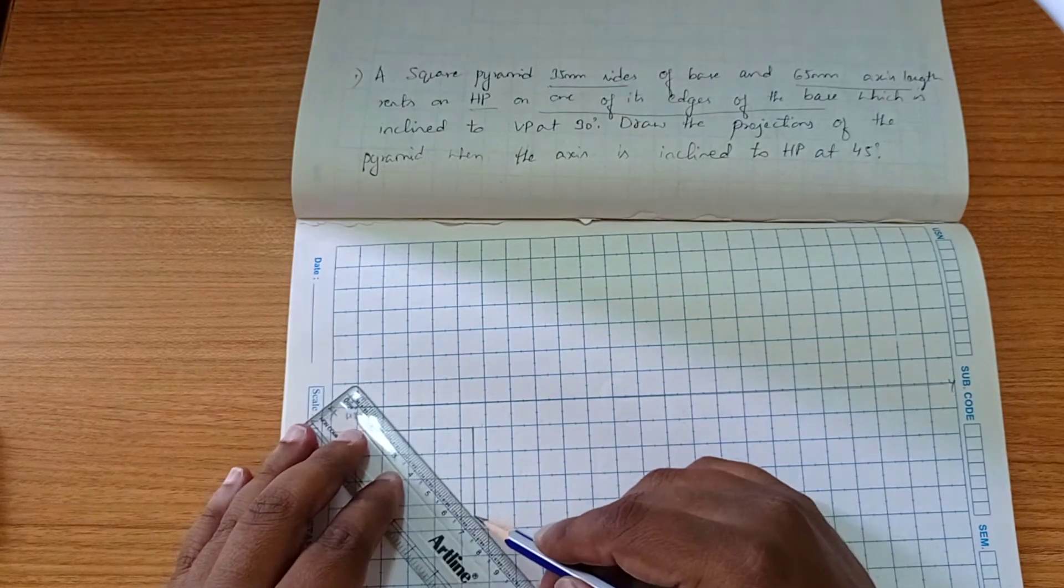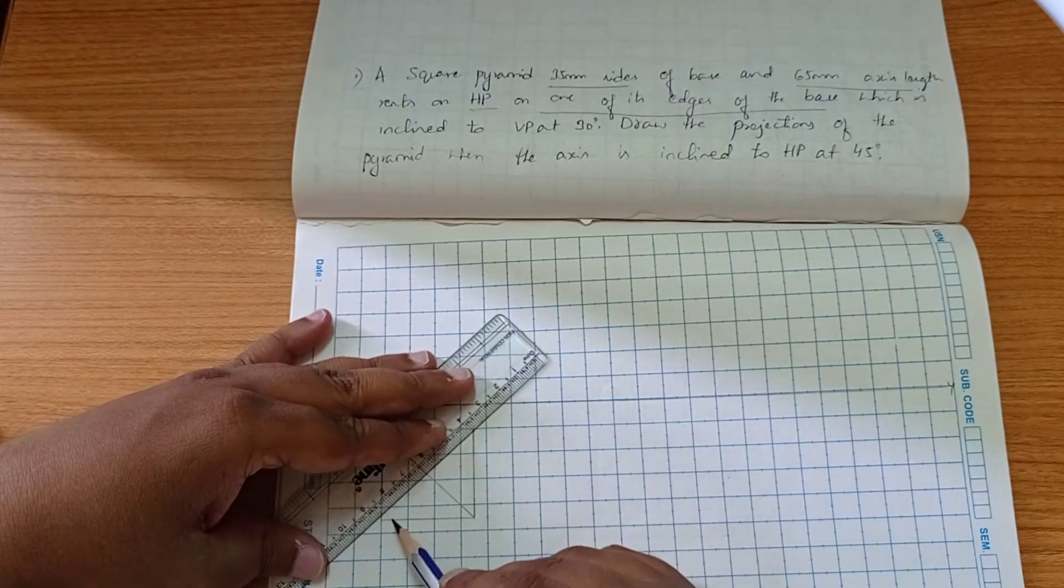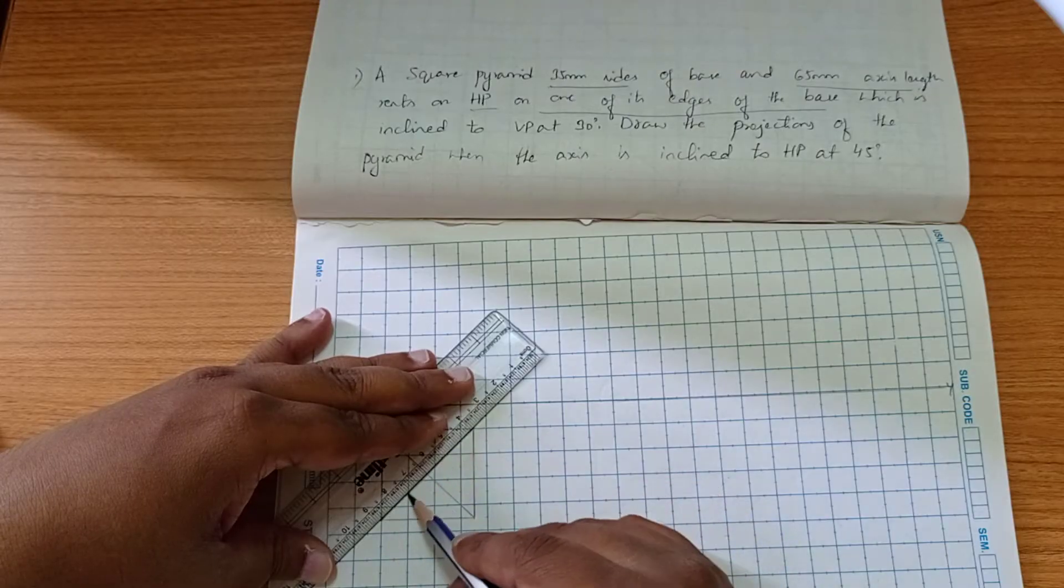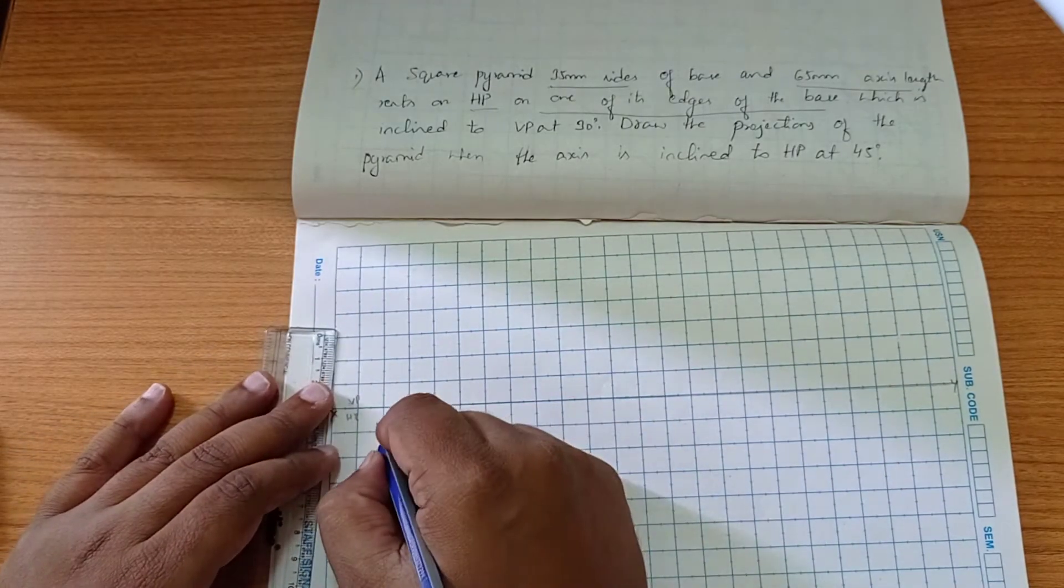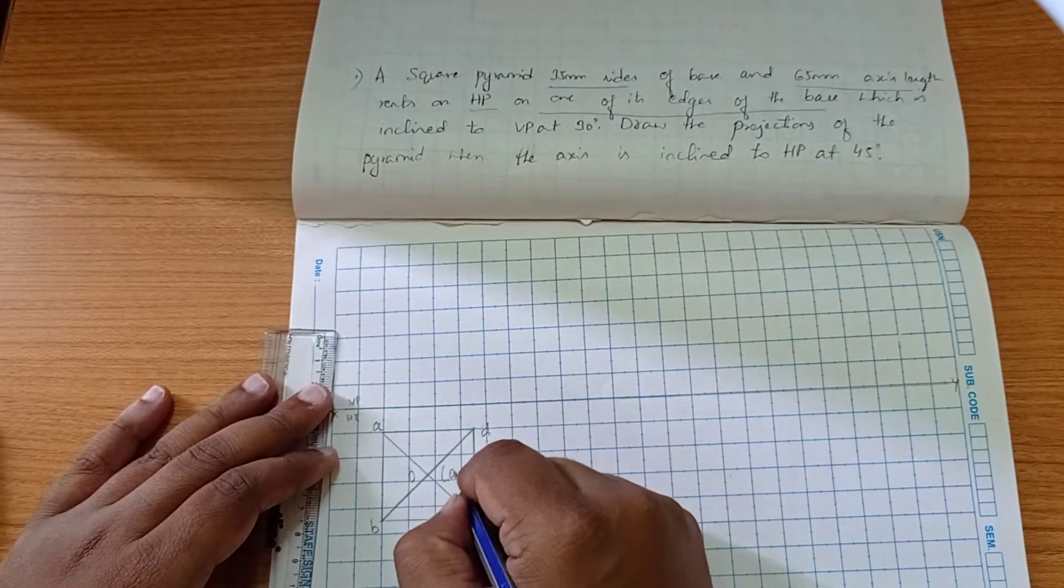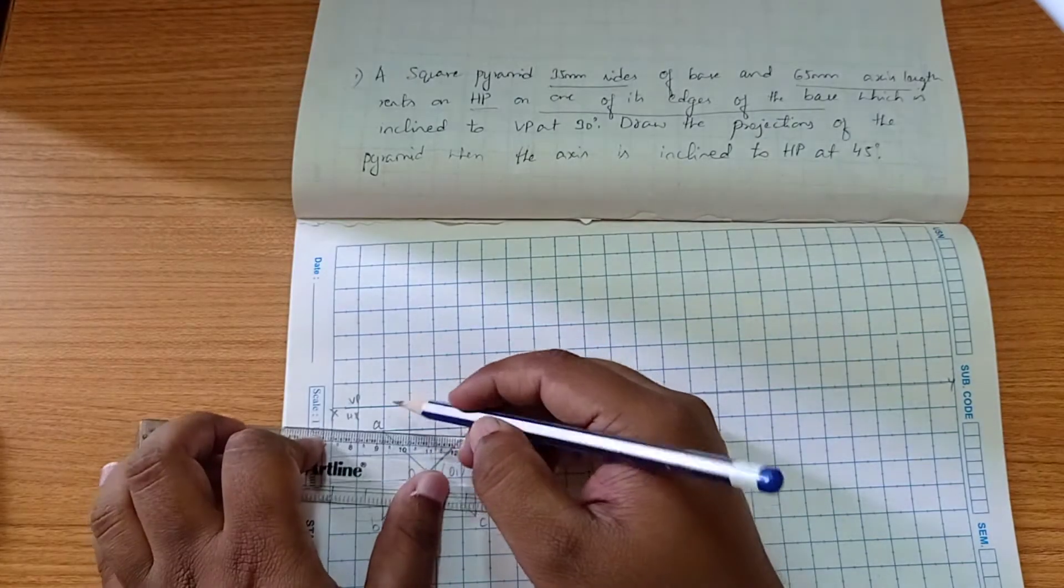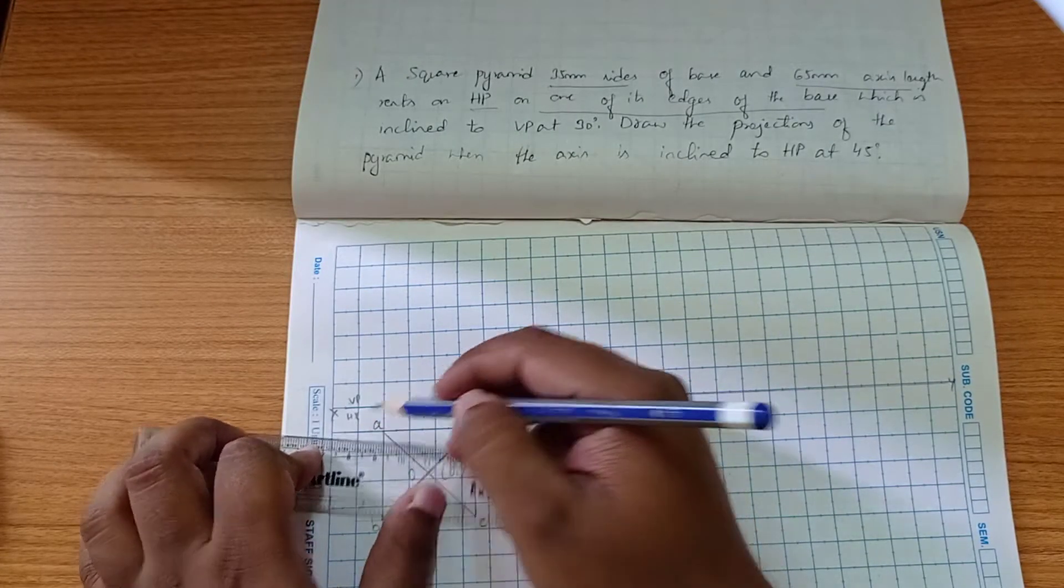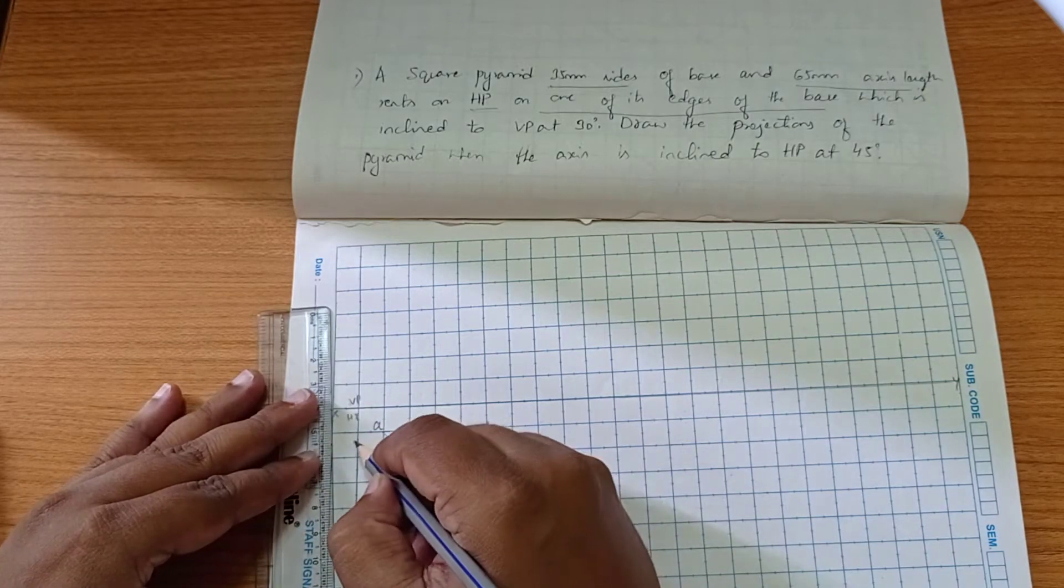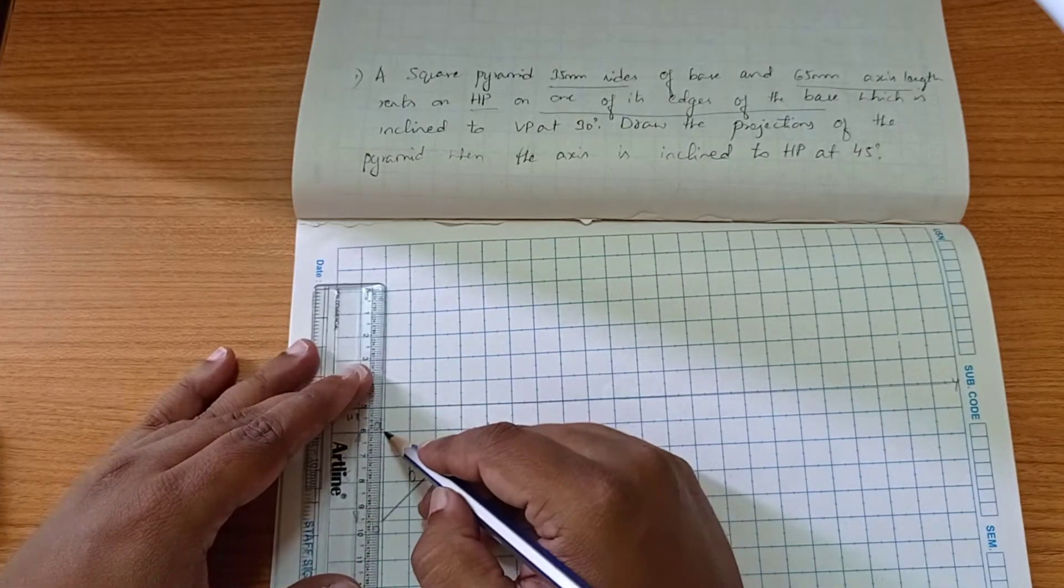The slant edges will be thick lines because these are slanted edges. We can write A, B, C, D, 4 and 1, and show the dimension here on one side. It is 35mm.